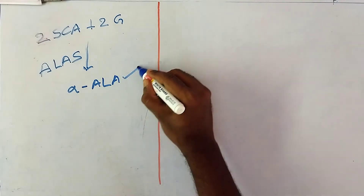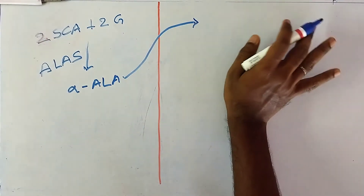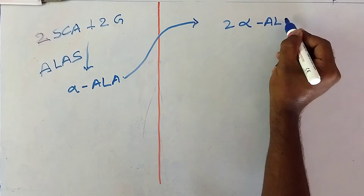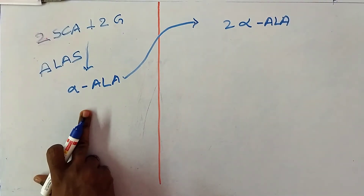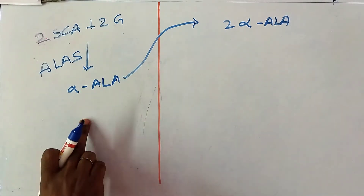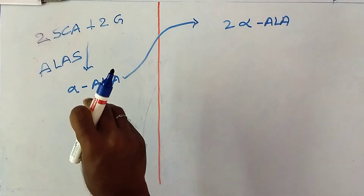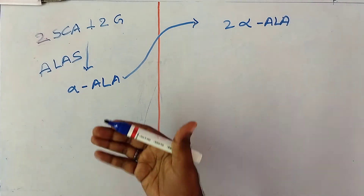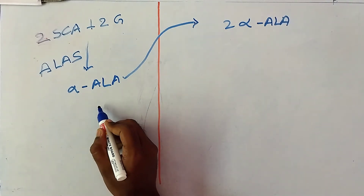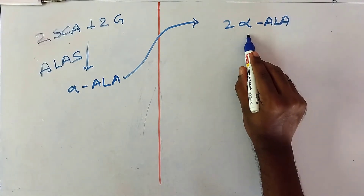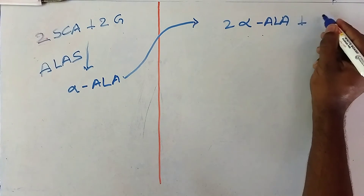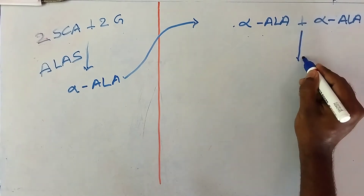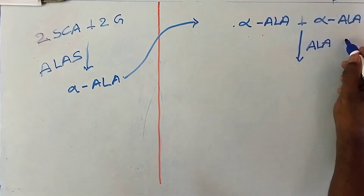These alpha-aminolevulinic acid molecules are transported to the cytoplasm. At the cytoplasm, two molecules of alpha-aminolevulinic acid combine — one molecule of ALA combines with one more molecule of ALA — forming two molecules of ALA ready for the next step.